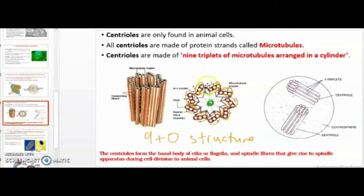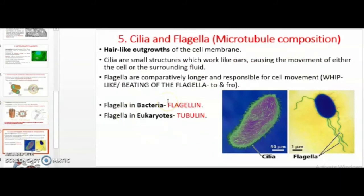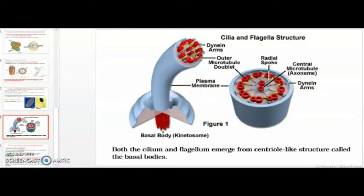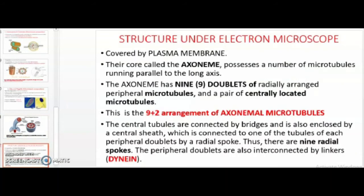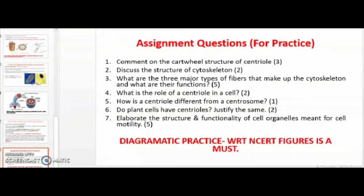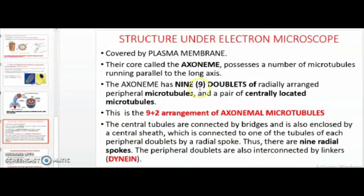This is what we see under the electron microscope. The last most important organelle, which is also made up of microtubules — cilia and flagella — requires more description. We will have the discussion of the 9+2 arrangement, so cilia and flagella require more detailed coverage. I take the privilege of discussing it in the next class.